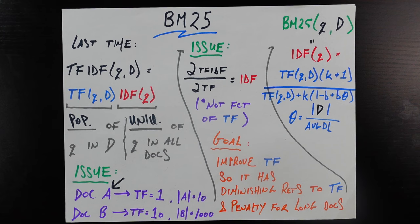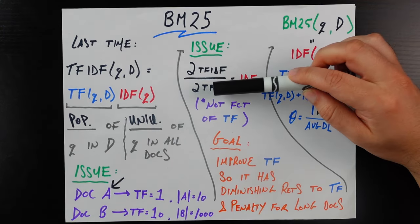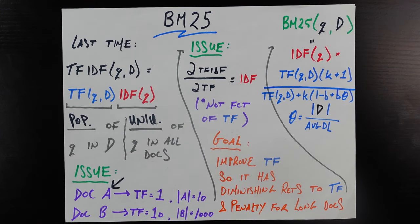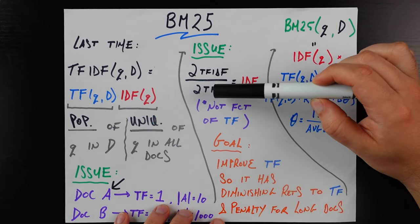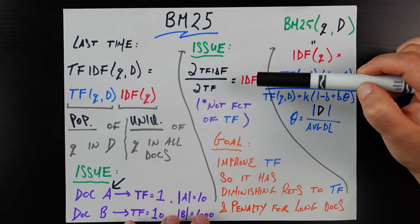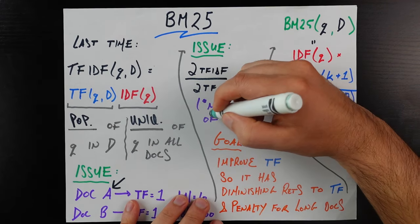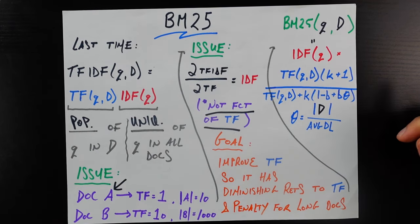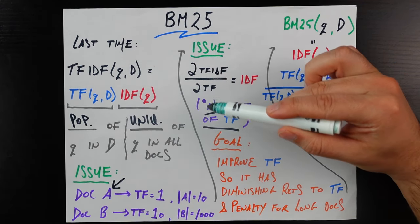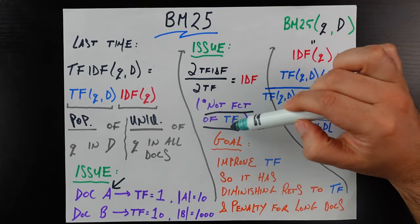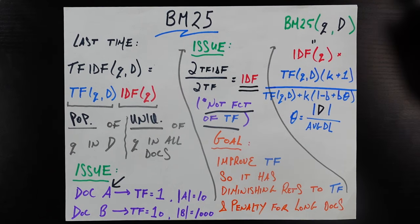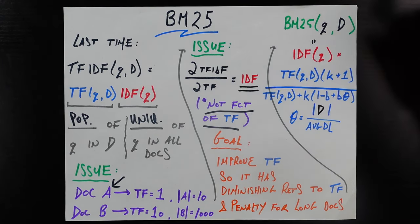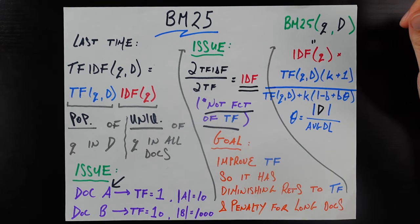There's another issue we want to address, and we can do that by taking the partial derivative of TF-IDF with respect to TF. Partial derivatives ask: if I change TF by a little bit, how does my overall TF-IDF score change? Since TF-IDF is just a multiplication of two terms, the partial derivative of TF-IDF with respect to TF is simply equal to IDF. The key point is that it is not a function of TF — meaning for every unit increase in TF, you get a constant reward of whatever IDF happens to be.